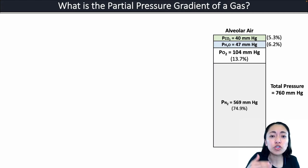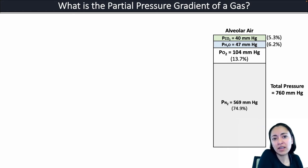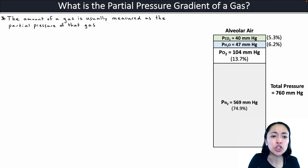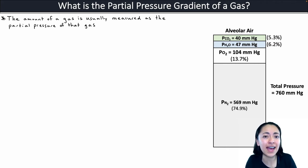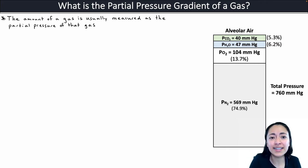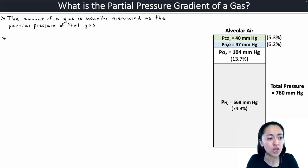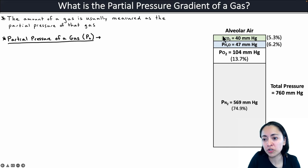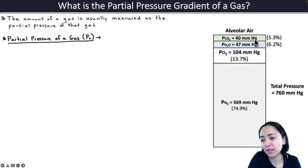What drives alveolar and systemic gas exchange — why does oxygen move one way and carbon dioxide move the other way? This has to do with what we call the partial pressure gradient of a gas. The amount of a gas is usually measured as its partial pressure. Instead of saying the concentration of a gas, we describe the amount of a gas in a mixture as its partial pressure. For example, the partial pressure of carbon dioxide within the air in your alveoli is about 40 millimeters of mercury.